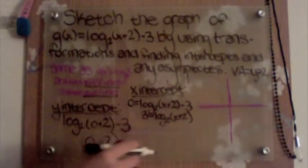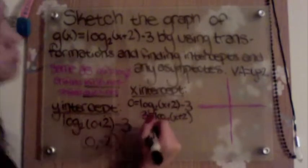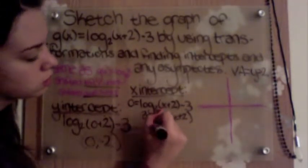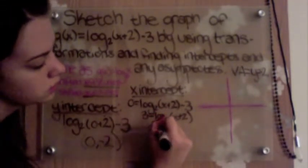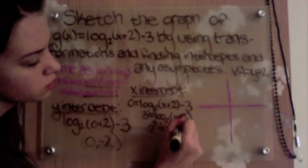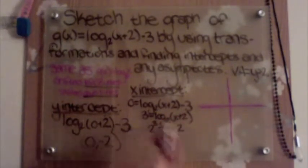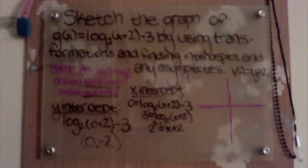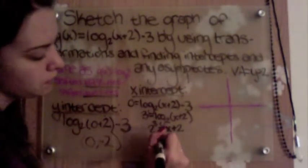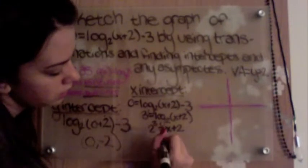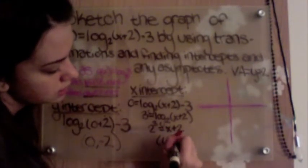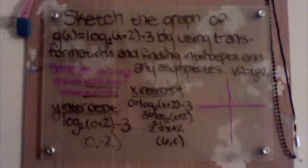Now to get rid of this log, we're going to put it into exponential form, which gives us 2³ = x+2. 2³ is 8. We subtract 2 to get x by itself, which gives us 6. So we have (6, 0) as our coordinates for our x-intercept.